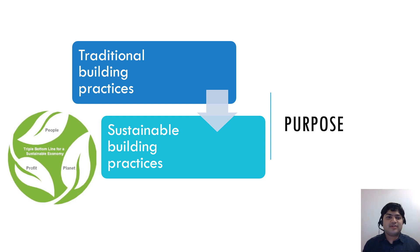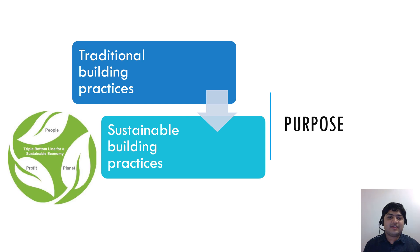How can it be summarized? What's the bottom line? It's called the triple bottom line for a sustainable economy. If you take care of people, planet, and profit at the same time, it will lead to a sustainable economy — and that's the goal behind LEED.